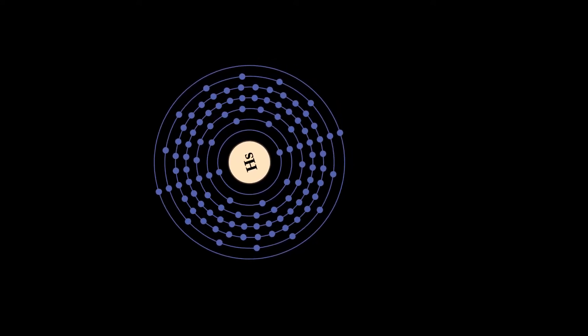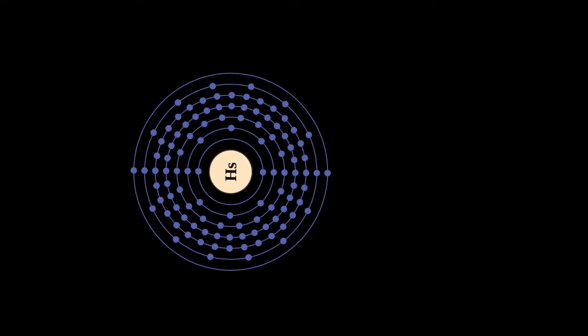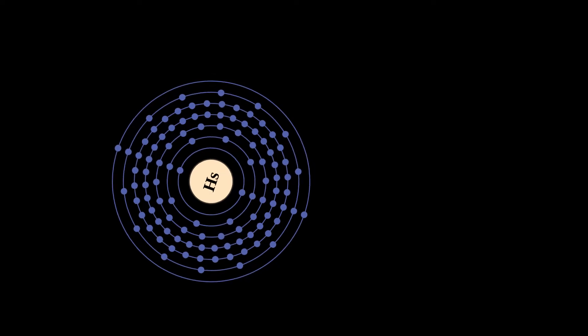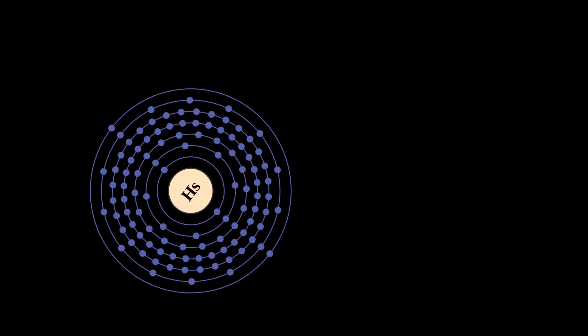In bulk quantities, Hassium is expected to be a silvery metal that reacts readily with oxygen in the air, forming a volatile tetroxide.